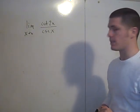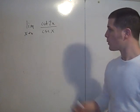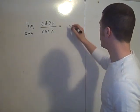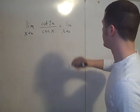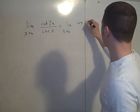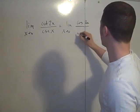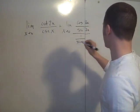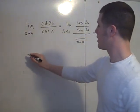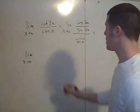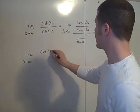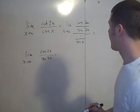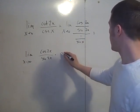The cotangent is cosine over sine, and the cosecant is 1 over sine, so we'll employ those two identities. This becomes the limit as x goes to 0 of cosine 2x over sine 2x, divided by 1 over sine x, which equals the limit as x goes to 0 of cosine 2x over sine 2x times sine x.